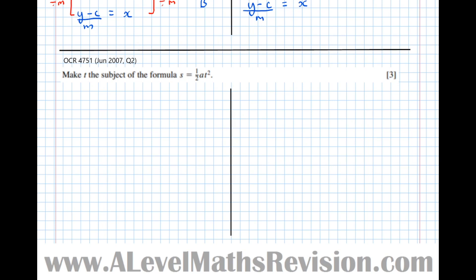So, onto doing this question. Make T the subject of the formula S equals a half A T squared. I'm going to do it two ways again, the way that you've probably been taught it and the way that I prefer to think about it. It's very important you start by copying out the question. Your solution should be a comprehensive story of how you got from the start to your answer.